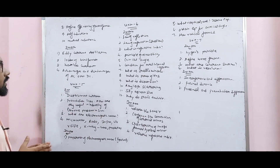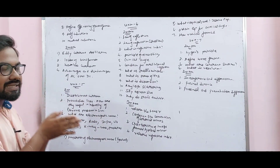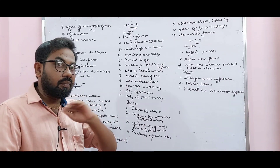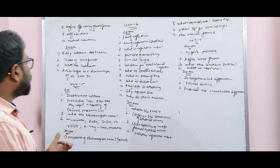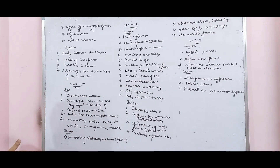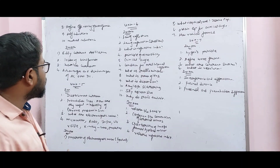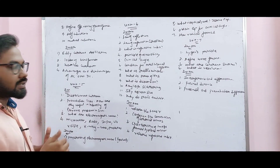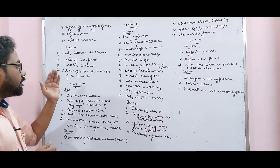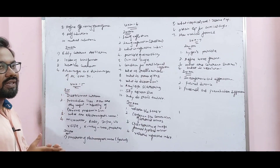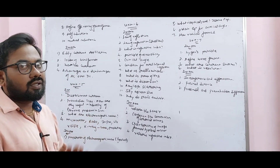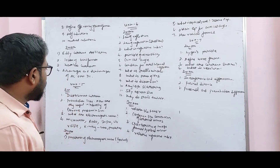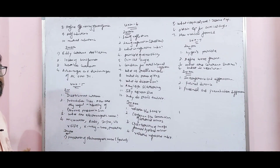3 mark: Eddy current and its applications. 5 mark: Losses of transformers — very important, confirm question. Wattless current is very important. Advantages and disadvantages of AC over DC. Displacement current.